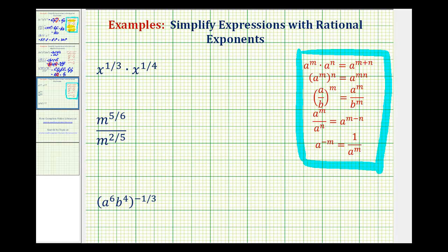Looking at the first example, we have x to the power of one-third times x to the power of one-fourth. And since we're multiplying and the bases are the same, we need to add the exponents.